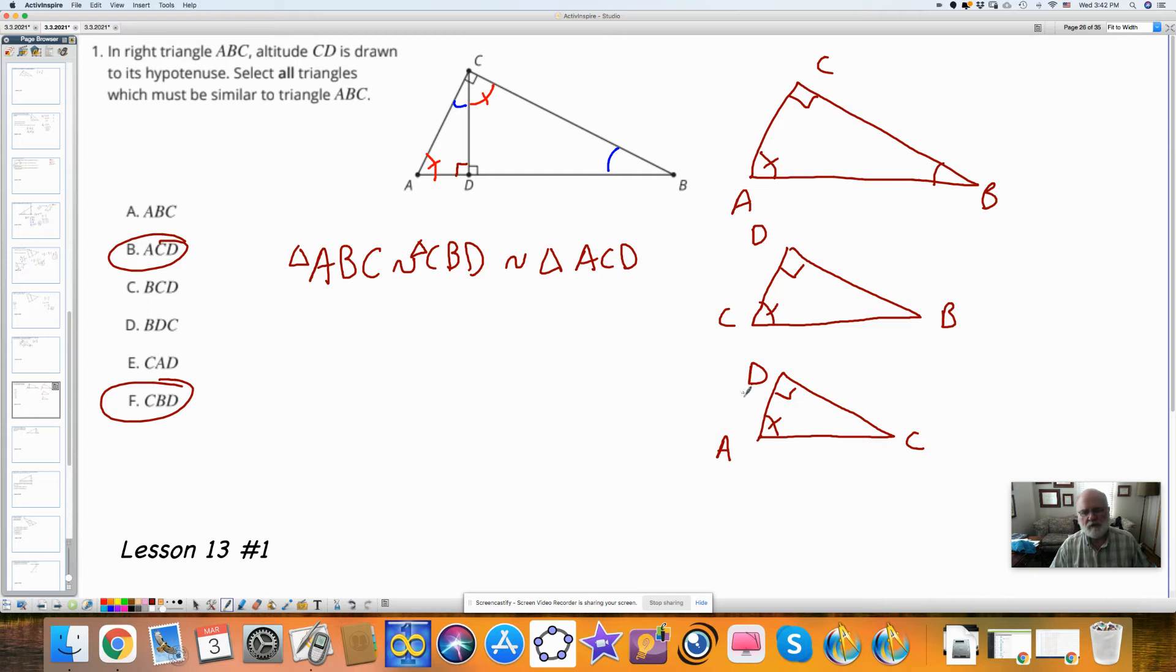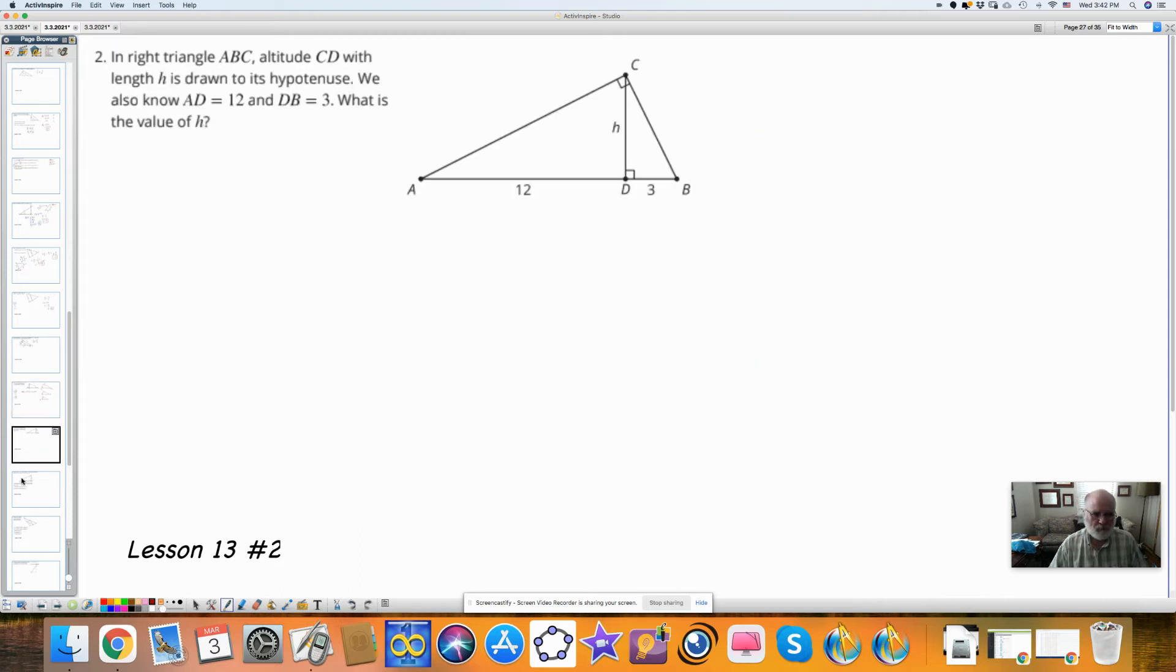This also is a good way to set up the proportions to separate the triangles. Here we have a triangle with H drawn, and it's the hypotenuse, to its hypotenuse. So we have a geometric mean. We also know that AD is 12. That's this length. And that DB is 3. What is the value of H?